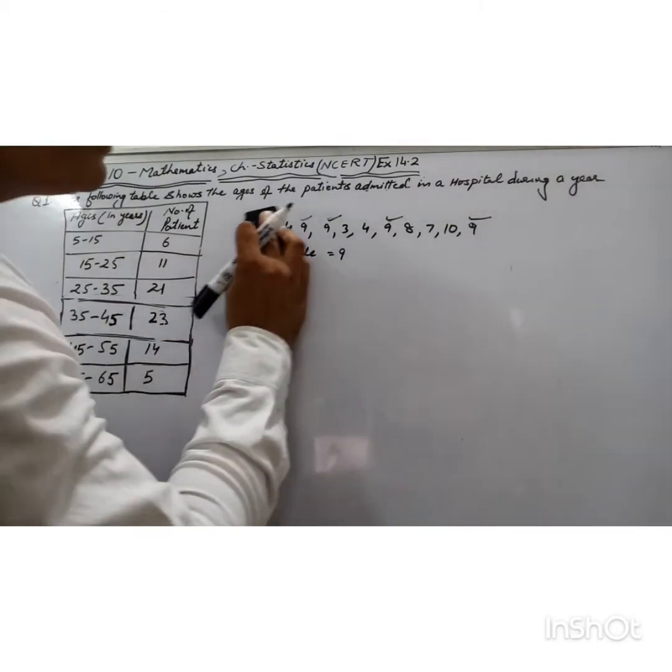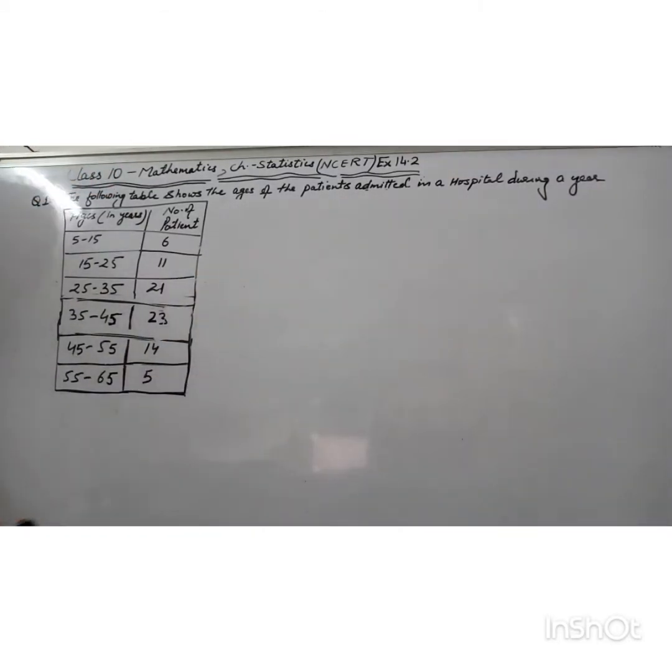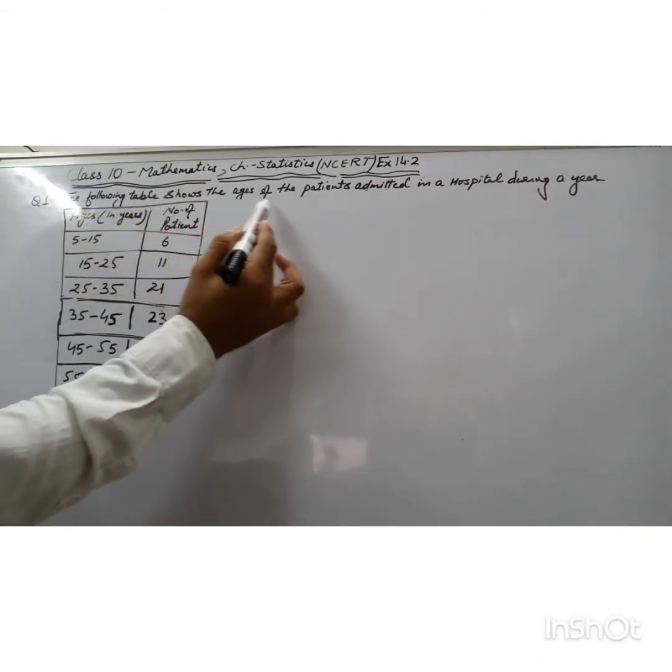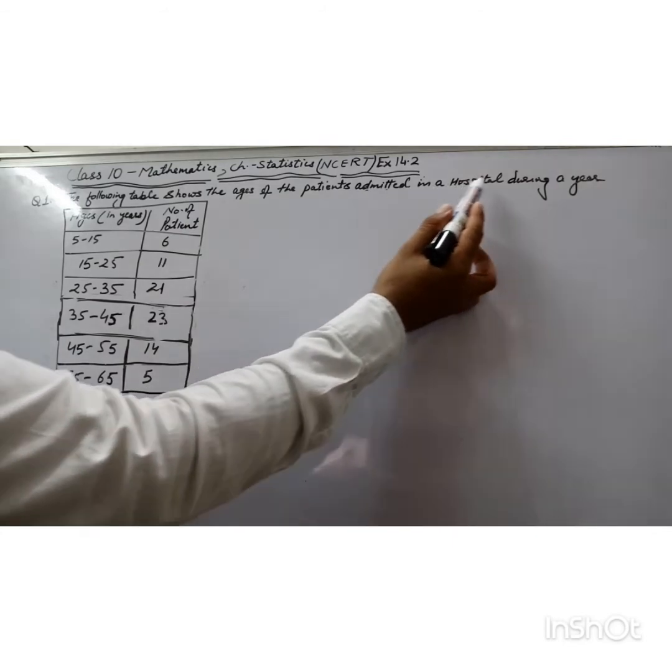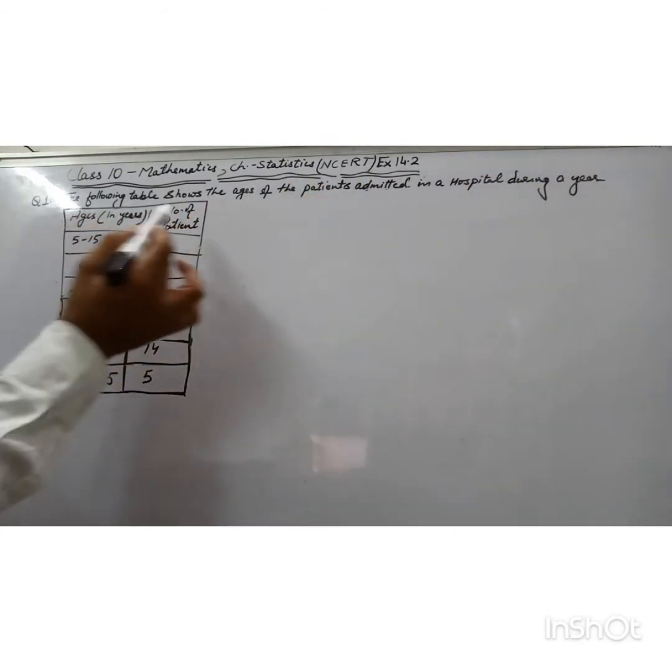For grouped frequency distribution, we have some other method to find the mode. Let's take one example: the following table shows the ages of patients admitted in a hospital during a year.